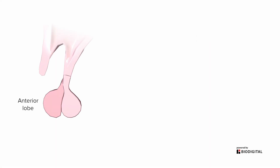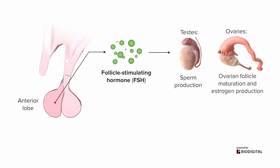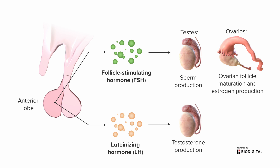The gonadotropic hormones include follicle stimulating hormone, or FSH, which has an effect on the gonads. In the case of the testes, that would be sperm production; in the ovaries, it drives ovarian follicle maturation and estrogen production. The other one is luteinizing hormone, which affects the testes in producing testosterone and also triggers ovulation in the ovary.